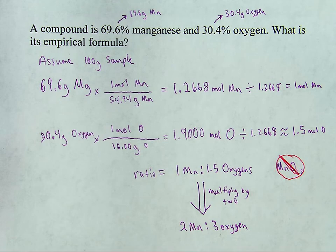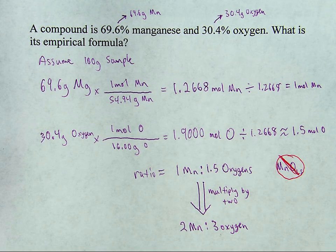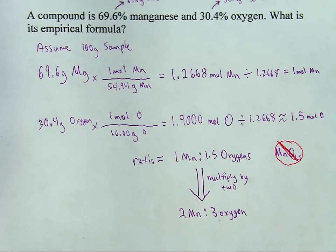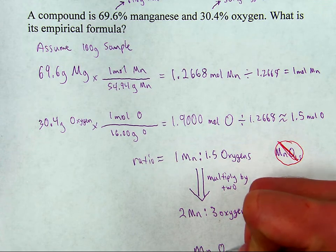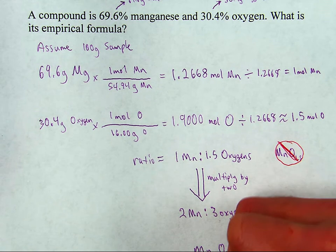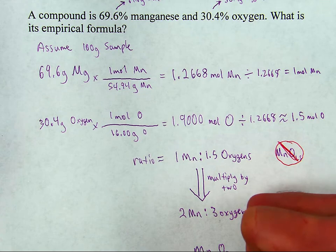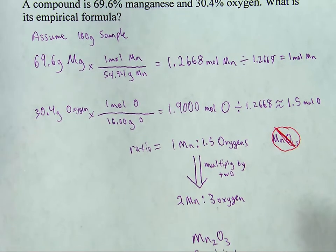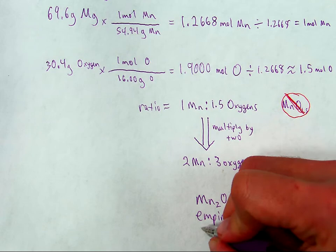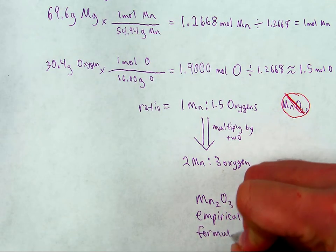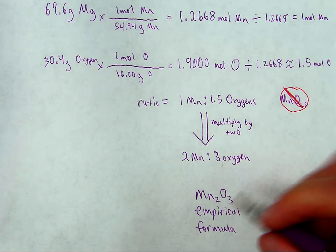I get a ratio of 2 manganese for every 3 oxygens. There you go. It moved into view so you can see it. All right, well, what that means is that the empirical formula is Mn2O3. Just label that up to make it clear what I'm doing. And box the answer.